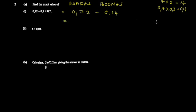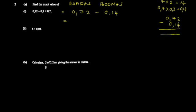Now do simple subtraction: 0.72 minus 0.14. When subtracting decimal fractions, align the decimal points. Everything corresponds here — you have digits in the second decimal place in both numbers.